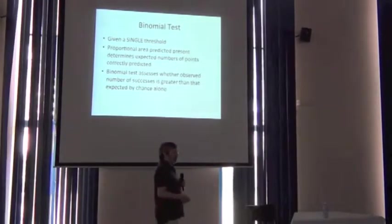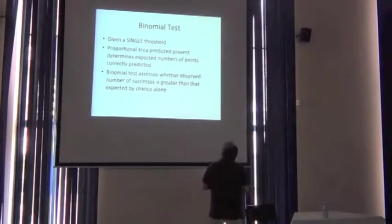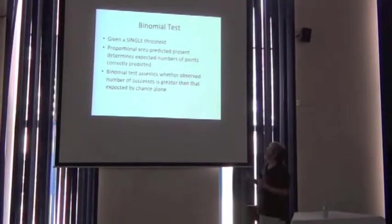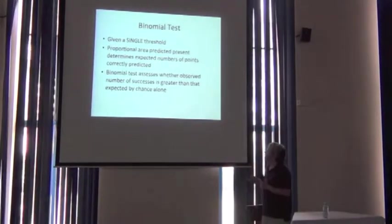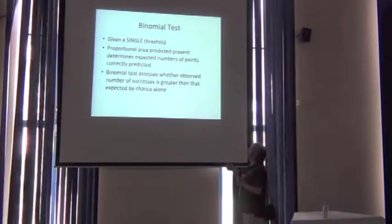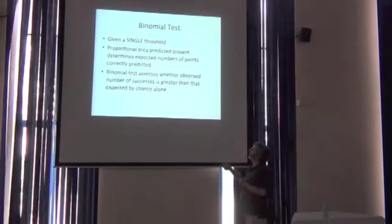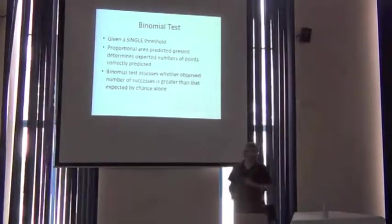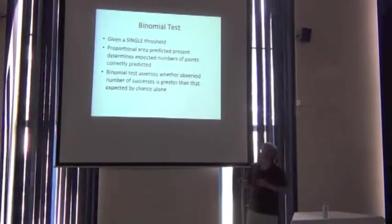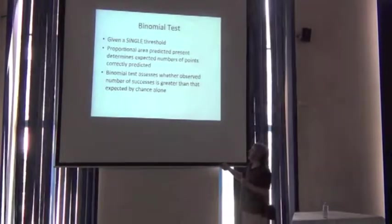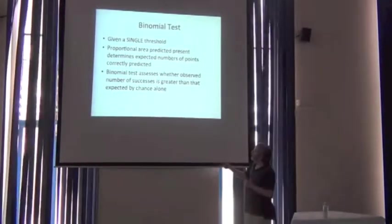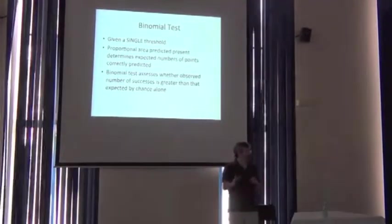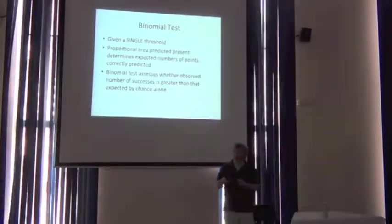Now, we just looked at binomial tests. This is the idea of taking a single threshold and using the proportional area predicted as present or suitable to determine the expected numbers of points correctly predicted in the test points. And then the binomial calculation assesses whether the observed number of successes is greater than what you would have expected by random.